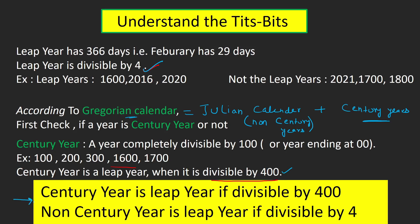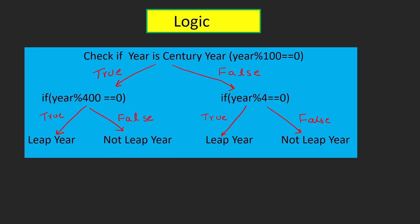In summary, we first check whether our year is a century year or not. A century year will be a leap year if it is divisible by 400, and a non-century year is a leap year only if it is divisible by 4. In the flowchart, I first check whether the year is a century year by dividing by 100. If it is completely divisible (remainder 0), we proceed down the true path; otherwise we go to the false path. Both paths ultimately lead to either leap year or not a leap year.